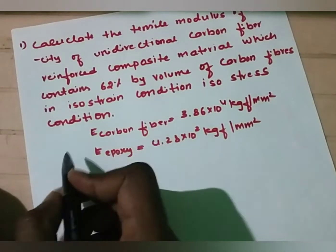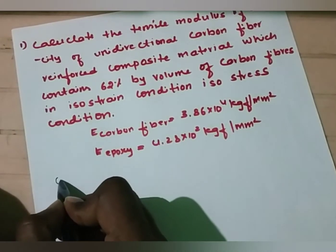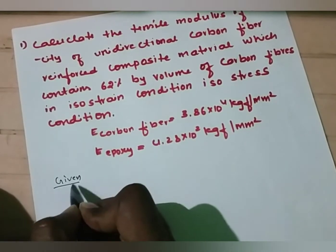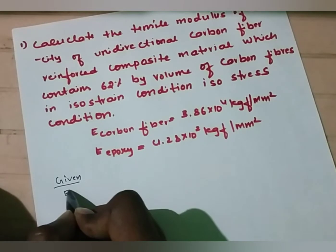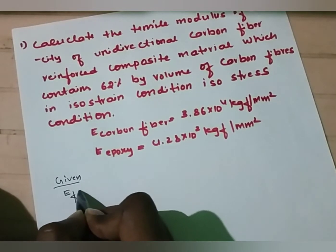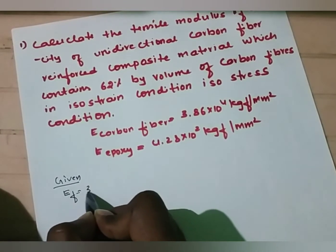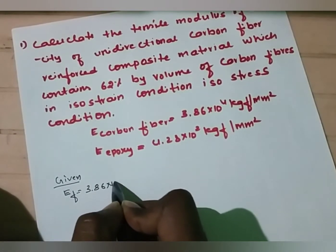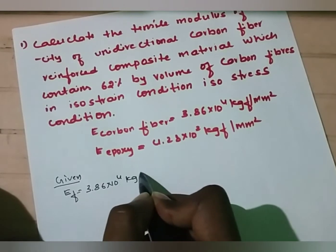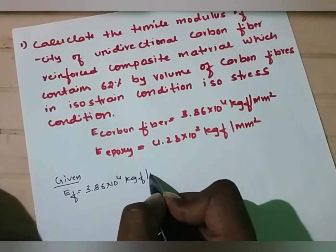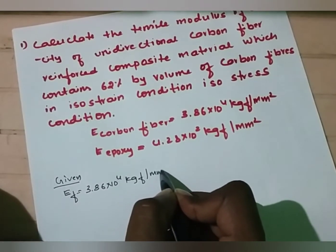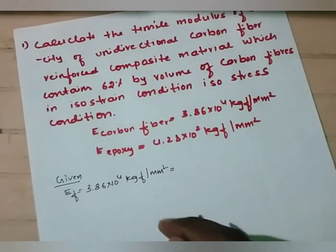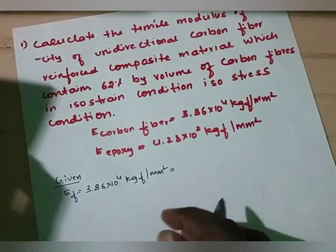First, write down the given data. The modulus for fiber is given as 3.86 × 10⁴ kgf/mm², but we have to convert kgf to newton.